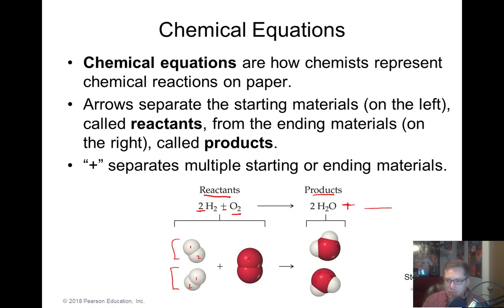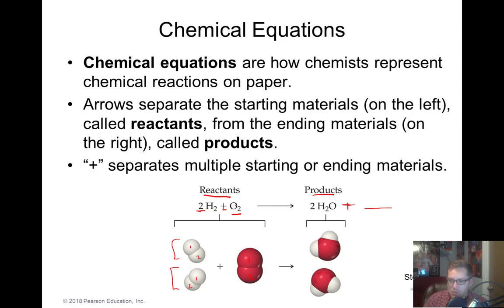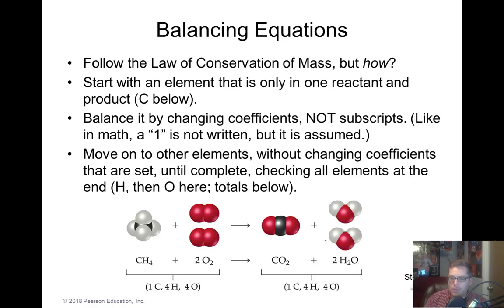Over here we've got oxygen — notice that oxygen comes in pairs, and you should recognize that both hydrogen and oxygen are diatomics. Over here we make two water molecules. Notice how we follow the law of conservation of mass: we started with four total hydrogens on the left side and ended with four total hydrogens on the right side, and we started and ended with two total oxygen atoms on each side.